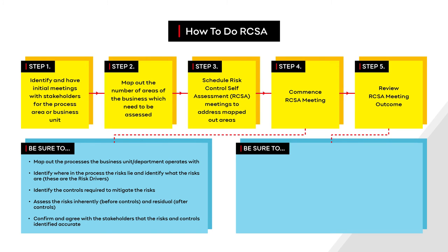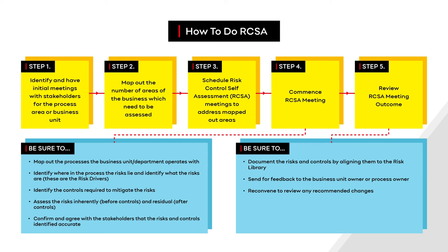After the RCSA meeting, there are a number of activities to undertake as the risk practitioner. Document the risks and the controls, then send them for review to the process owner or business area owner. Meet again to review any changes or anything that wasn't mentioned earlier, confirm that everything documented is accurate, and then sign off.